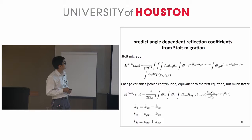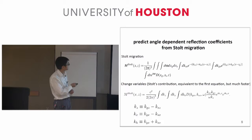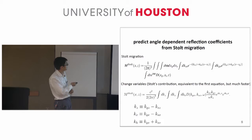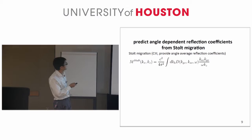Next, let's see how we can predict the angle-dependent reflection coefficient from STOE migration. The first formula is the original STOE migration. The second formula, which is equivalent to the first equation, changes the integral variables — this is STOE's contribution — and it makes the second equation much faster than the first original STOE migration.